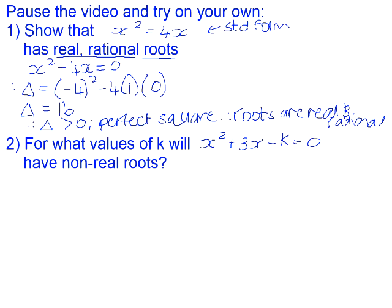Okay, question 2. For what values of k will x² + 3x - k = 0 have non-real roots? The moment we are asked something about the roots, we always start off with delta. This is in standard form.